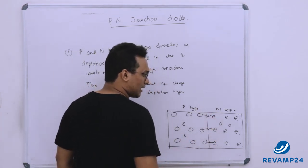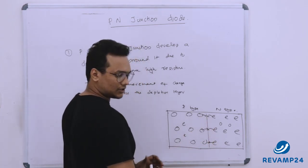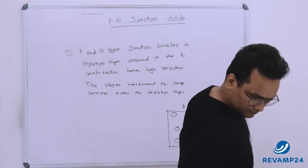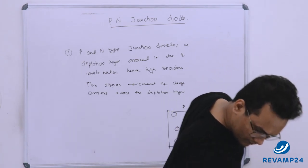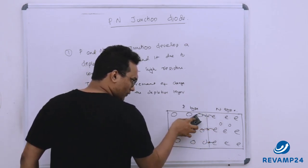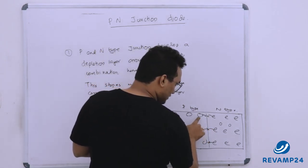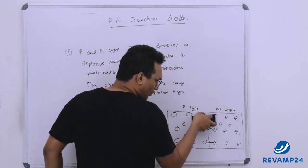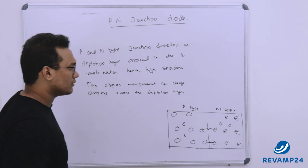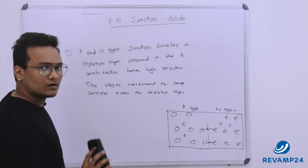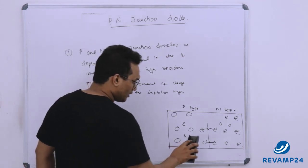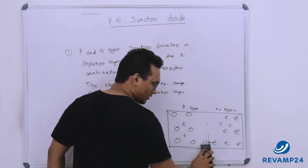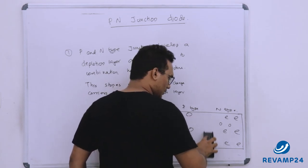Why is this process happening? Due to the attraction between electrons and holes from the P and N sides. This hole will go and combine with the electron, and on combination there will be neither holes nor electrons present. Holes and electrons combine and they diffuse.